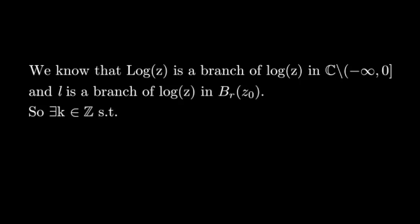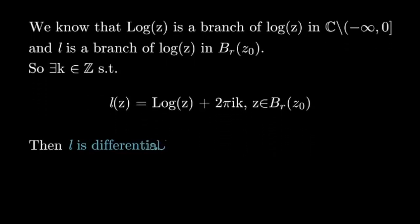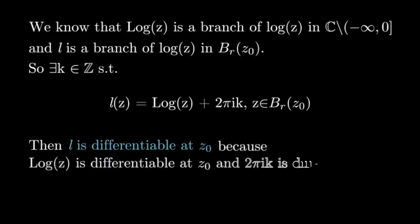So there exists a k in Z such that l is equal to log z plus 2πik. Then l is differentiable at z0 because log is differentiable at z0, and 2πik is differentiable because it is a constant.